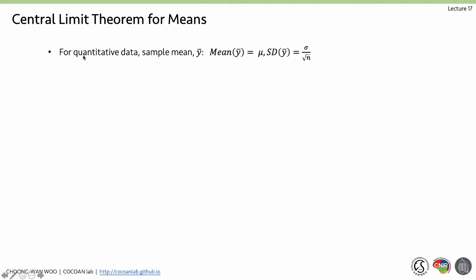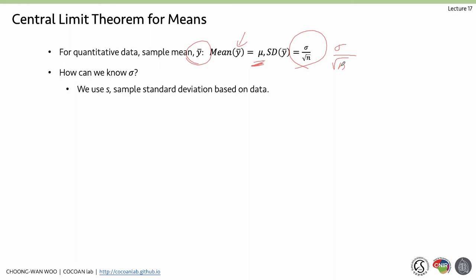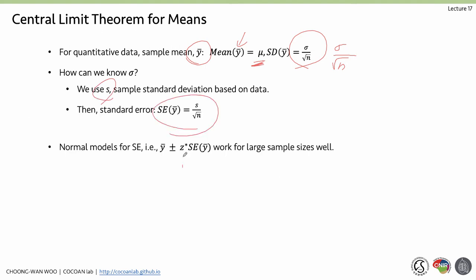We learned about the central limit theorem for means already. For quantitative data, the sample mean is y-bar. If we repeat sampling again and again, we get many y-bars, and the mean of those equals the population mean. The standard deviation is sigma divided by square root of n, but since we don't know sigma, we use the sample standard deviation s as the standard error. Using z-star times standard error works well for large samples but not for small samples.